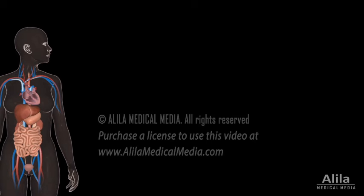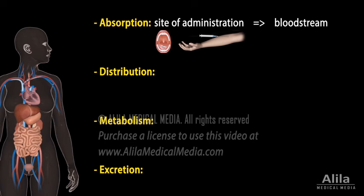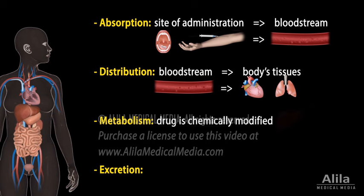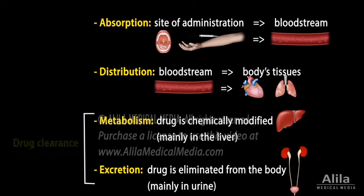The journey of a drug through the body involves four processes: absorption, distribution, metabolism, and excretion. Absorption is when the drug moves from the site of administration to the bloodstream. Distribution is how the drug is distributed from the bloodstream to the body's tissues. Metabolism describes how the body chemically modifies the drug. And excretion is how the drug is eliminated from the body. Because a drug typically has to be metabolized before it can be excreted, drug metabolism and excretion are sometimes collectively referred to as clearance.